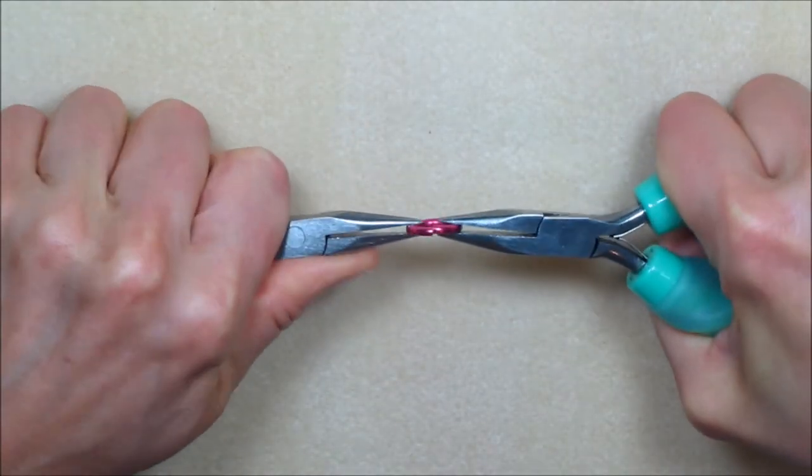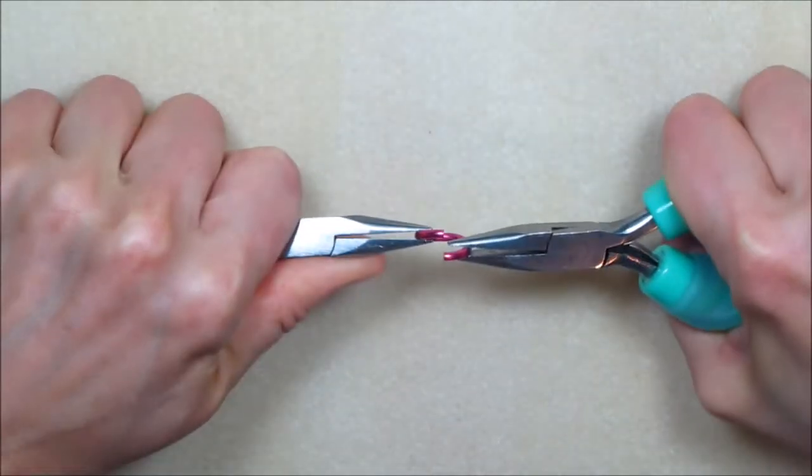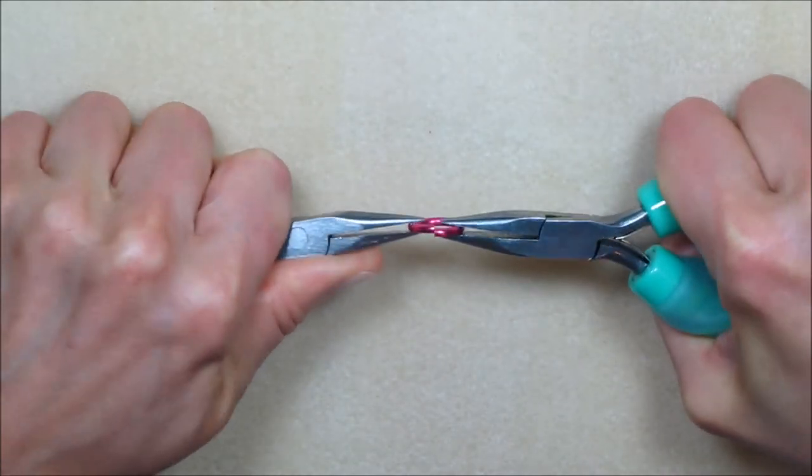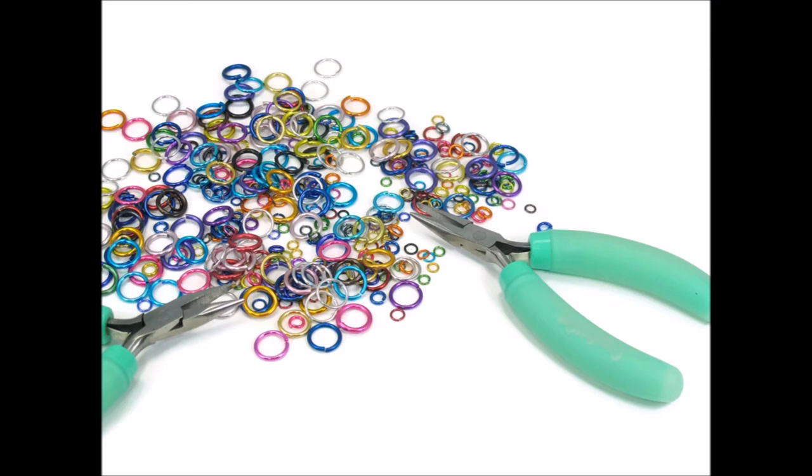To completely close the space between the ring ends, gently move them past each other front to back a couple of times to bring them flush. You can visualize two swinging doors coming to rest. Repeat opening and closing a jump ring until you feel comfortable with the progression.